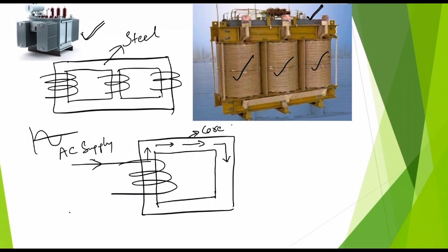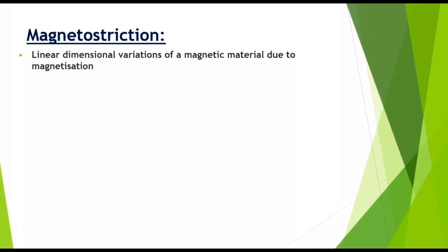Now the question is: why are these dimensions getting changed, and how is this magnetic flux able to change the dimensions of the transformer core? I will explain it. Let us go back to basics. Transformer core is made up of steel. Steel is a ferromagnetic material. In a ferromagnetic material, there are a lot of domains, and in each domain there are several number of atoms. In an atom, we have a nucleus, and around the nucleus we have revolving electrons. Because of its spin and revolution around the nucleus, each and every atom will have a magnetic moment and it behaves like a magnet.